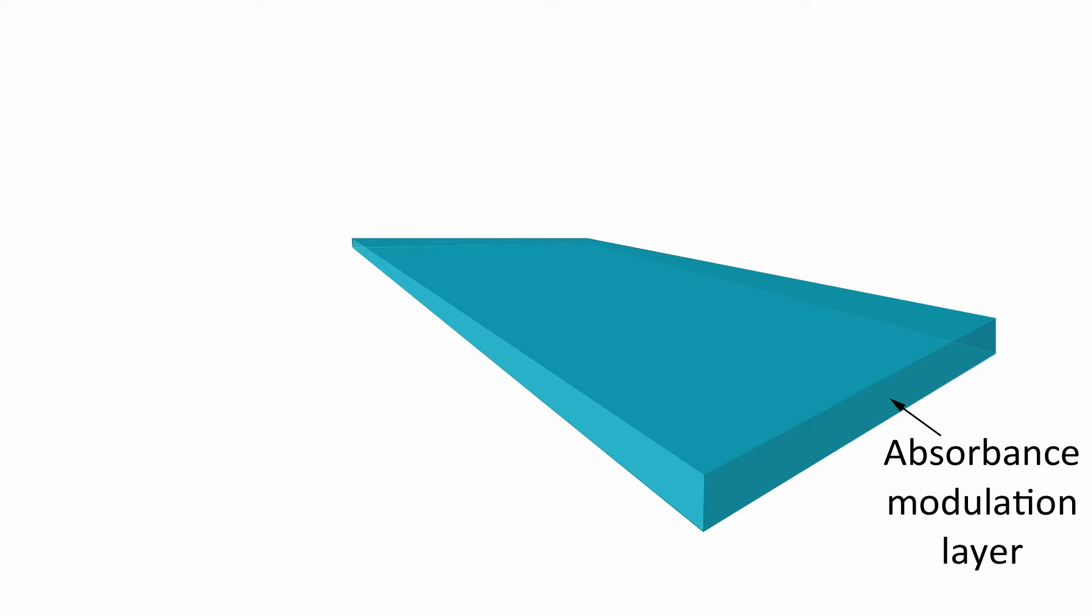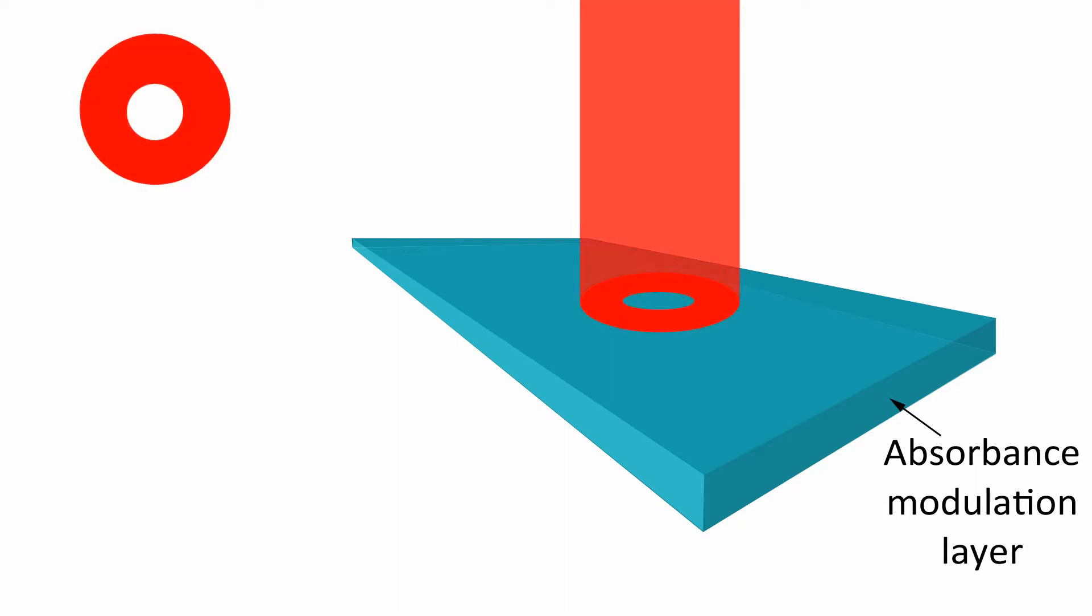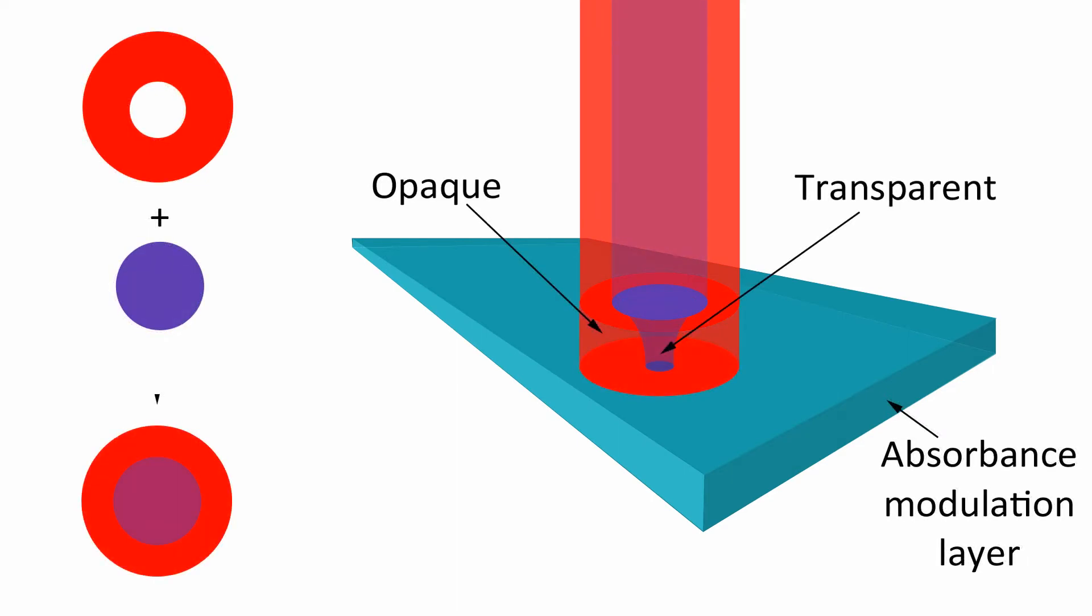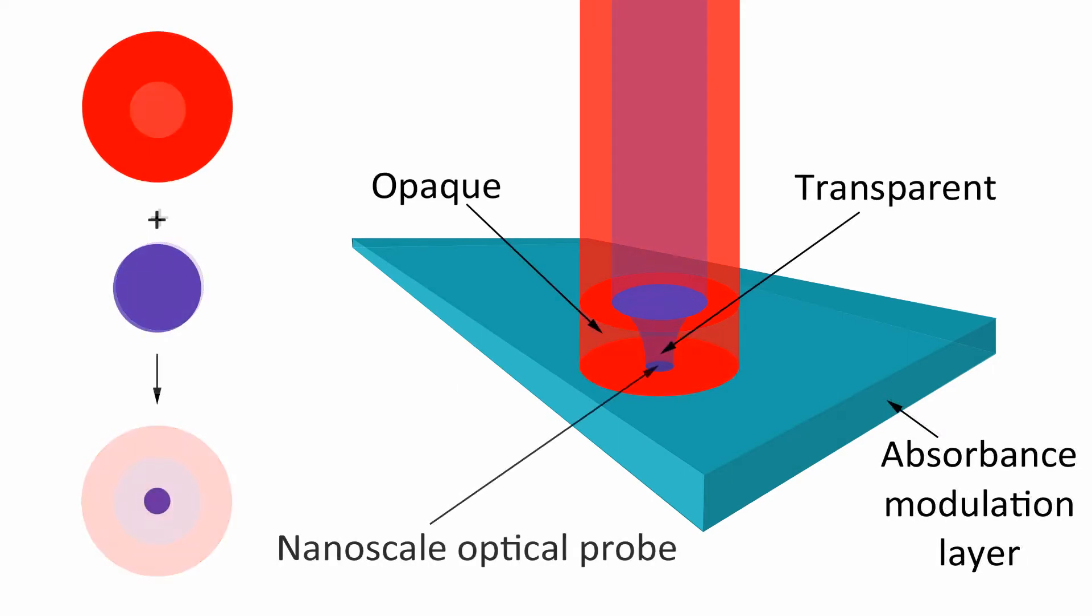So on a thin layer of the photochromic material, if we shine a red spot with an optical dark node at its center and place a UV beam on top, the transmitted UV radiation is squeezed to form a nanoscale optical probe at the bottom of the layer.